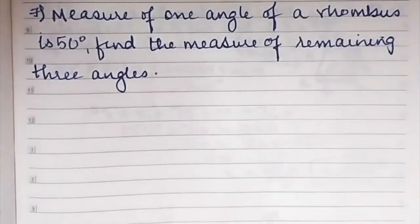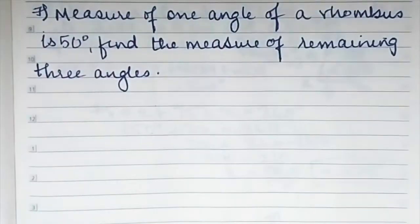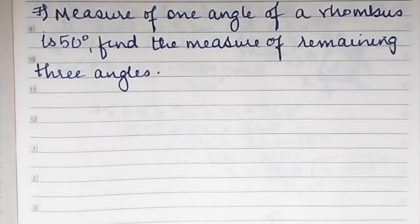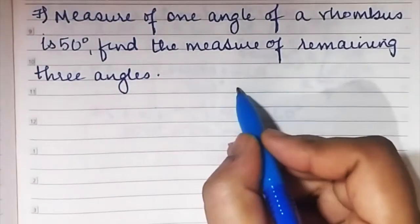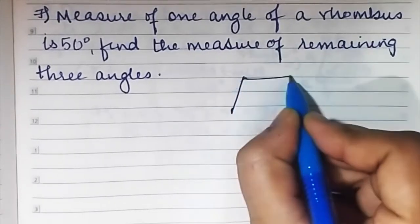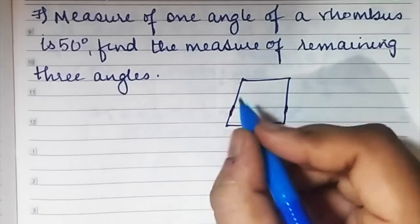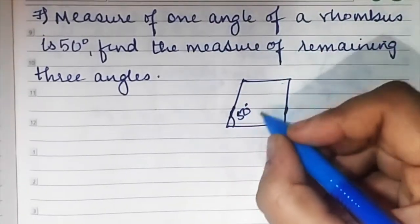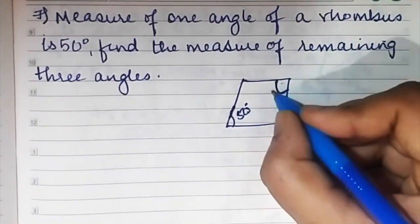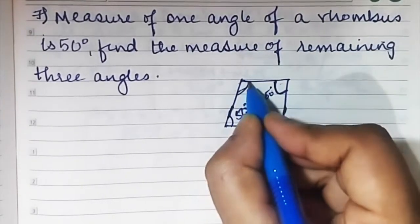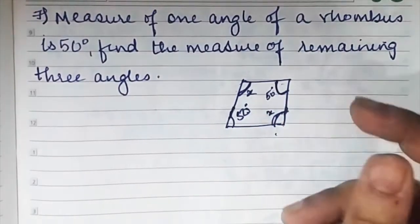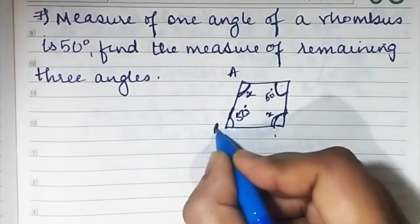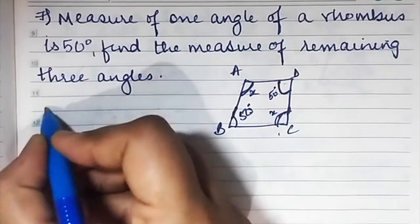Sum number 7: Measure of one angle of a rhombus is 50 degrees — find the measure of the remaining three angles. This is a rhombus with one angle of 50 degrees. In a rhombus, opposite angles are equal and congruent, so the opposite angle is also 50 degrees. Let the other two angles each be x. All angles together make 360 degrees. Let's label the vertices A, B, C, D.